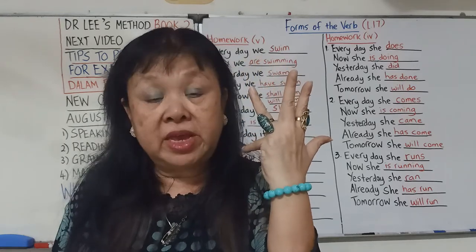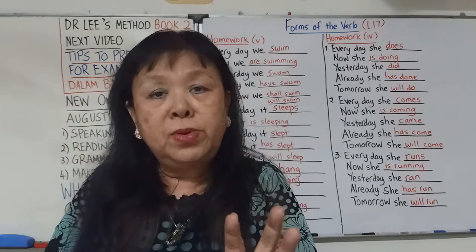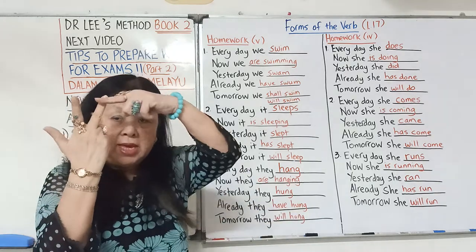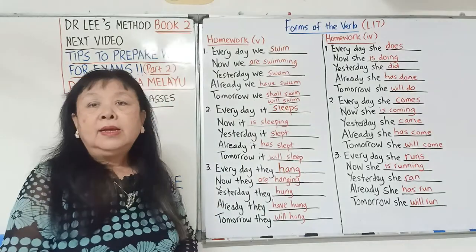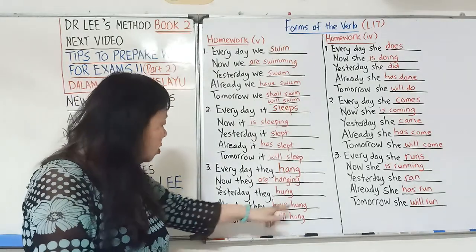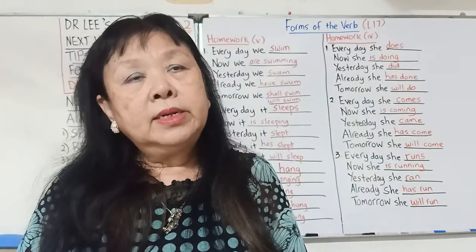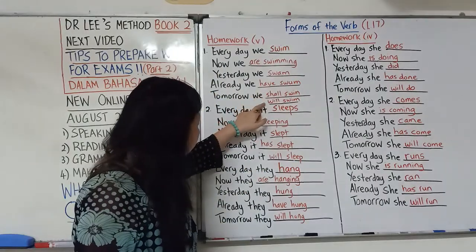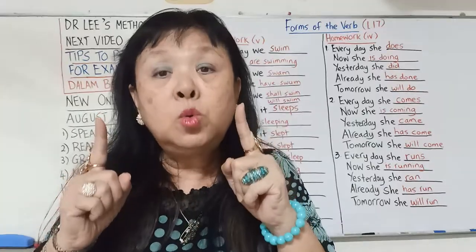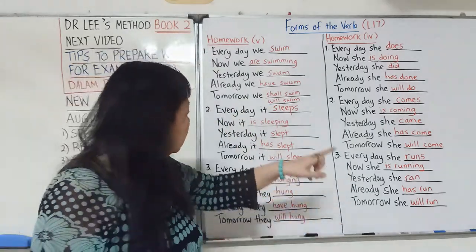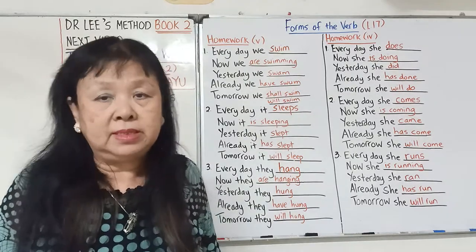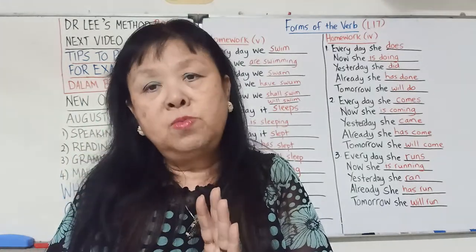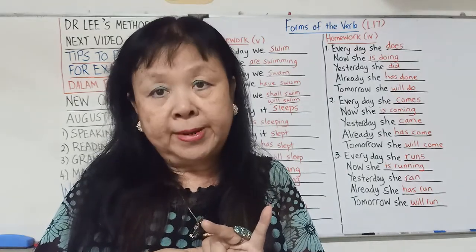Already they have hung。当我们用already，没有提什么时候发生，只是让你知道这个事情已经有成果了，或者发生不久。I、you、we、they用have，he、she、it用has。在have跟has的后面加一个past participle，动词的第三个位，例如take、took、taken。这个叫做present perfect tense。Tomorrow they will hang，明天是未来词，simple future tense。I跟we可以用will或shall；其他的只能用will。不管是shall还是will，后面必须是base form，原本的字，没有s、ed或ing。